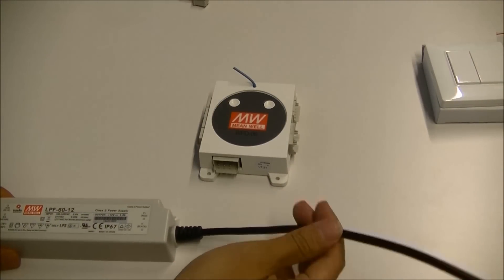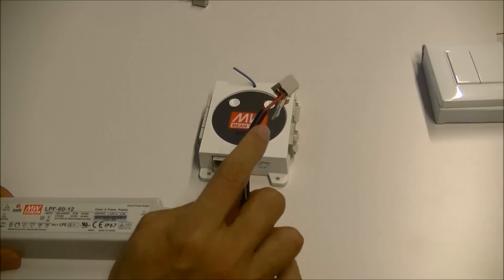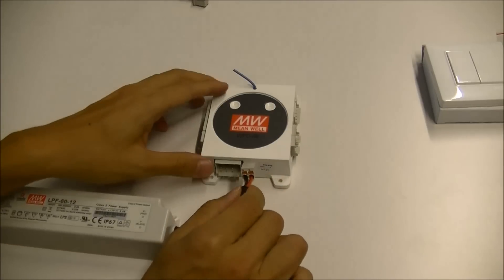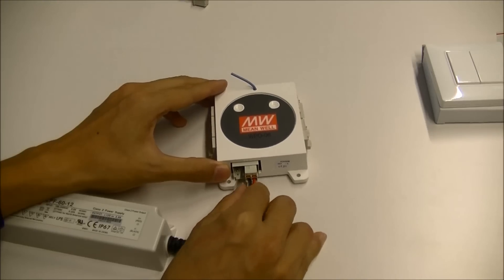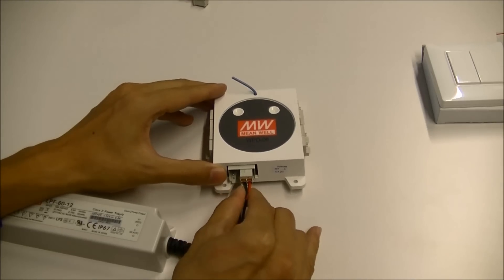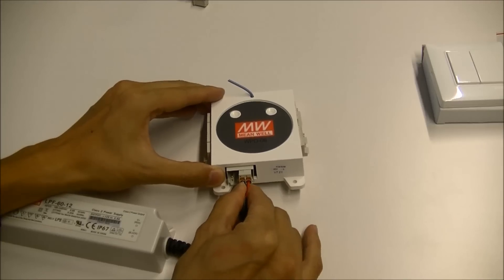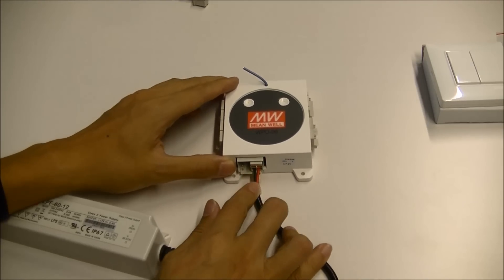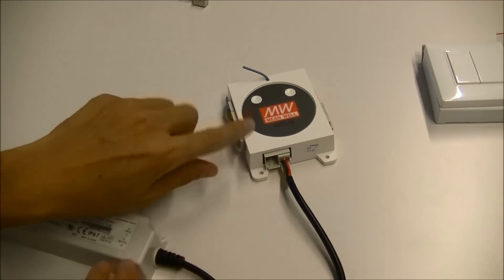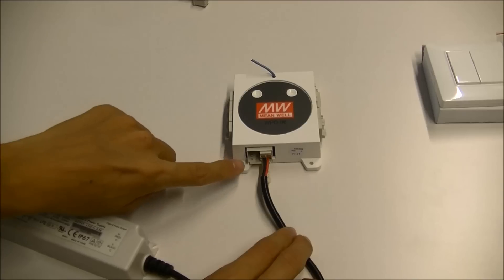First, push the plug from LED driver into the input of dimmer. You will hear a click sound in case the plug is pushed in correctly. If the total current is higher than 16 amperes, it is necessary to have another plug at the input.